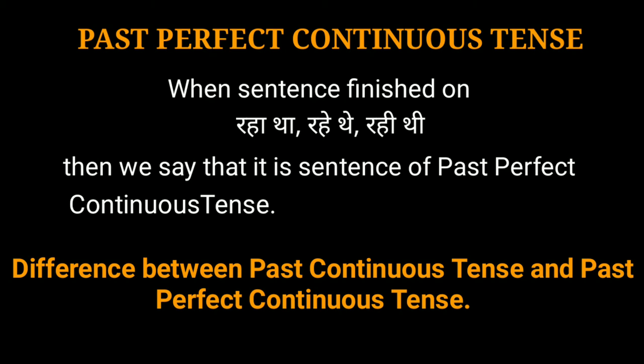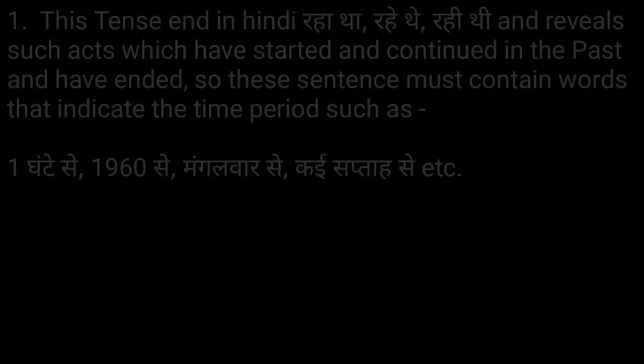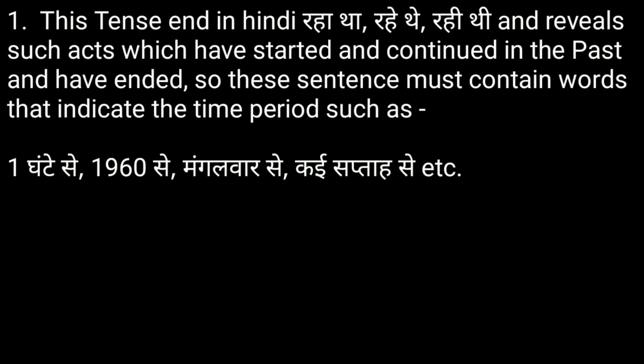Let us understand the difference between past continuous tense and past perfect continuous tense. In past perfect continuous tense, जब भी कोई वाक्य रहा था, रहे थे, रही थी पर समाप्त होता है, तब हम कहते हैं कि यह past perfect continuous tense है. This tense in Hindi ends on रहा था, रहे थे, रही थी, and revolves around acts which have started and continued in the past and have ended.